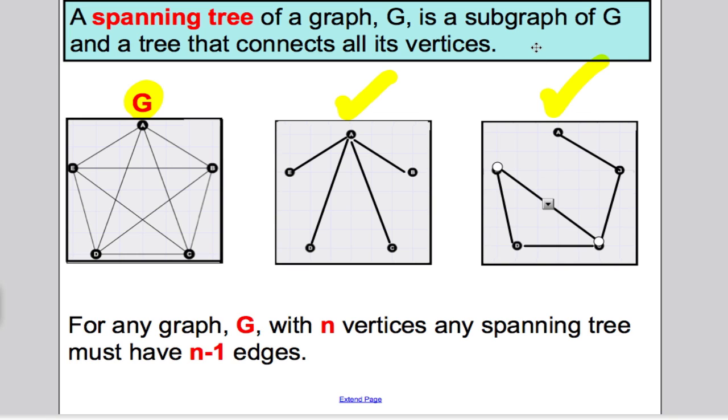Something like that would not be a spanning tree because it's not all connected. E is not connected to the rest. A graph with n vertices, for any spanning tree of that, must have n minus 1 edges or arcs.